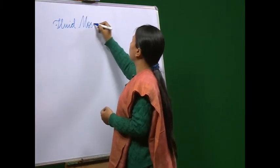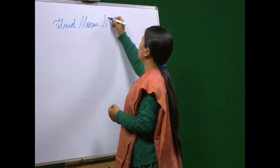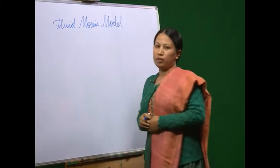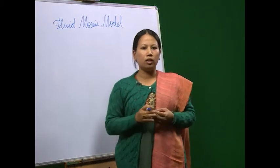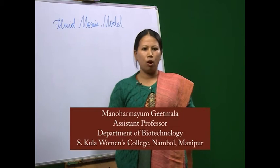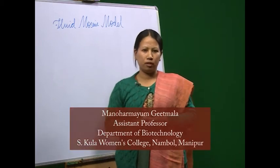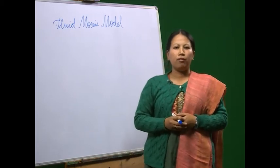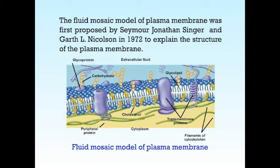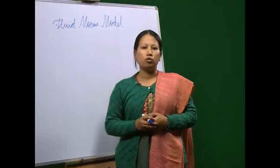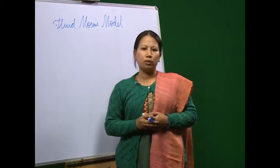In the previous talk, we have discussed about biomembrane, its structure and component. Today, we'll be discussing briefly on the Fluid Mosaic Model of Plasma Membrane. The Fluid Mosaic Model explained various observations regarding the structure of functional cell membrane. The Fluid Mosaic Model of Plasma Membrane was first proposed by Singer Jonathan Singer and Grant L. Nicholson in 1972 to explain the structure of the plasma membrane.